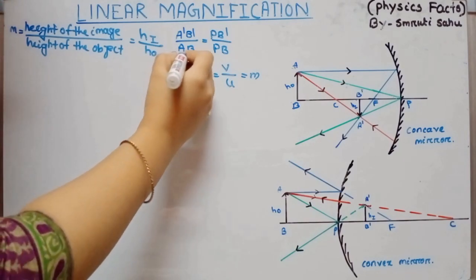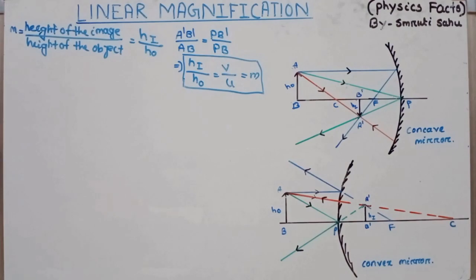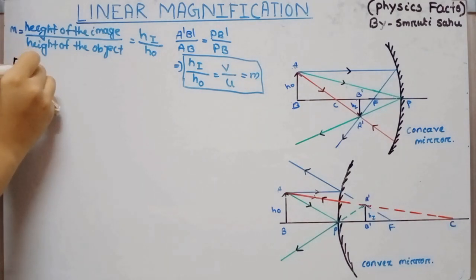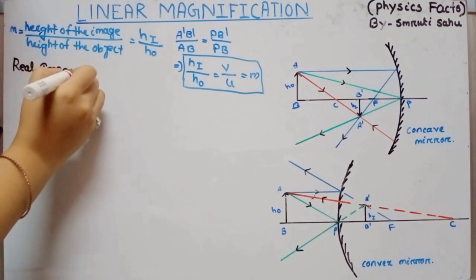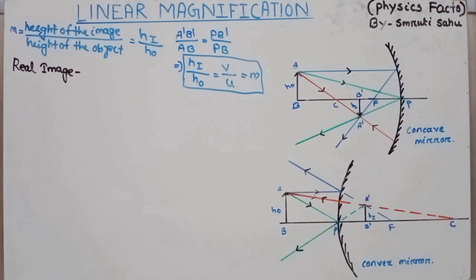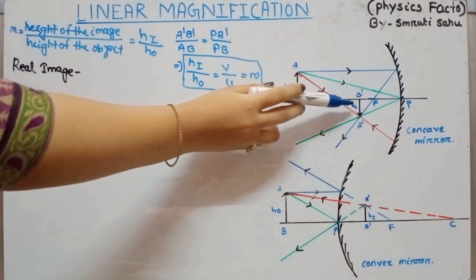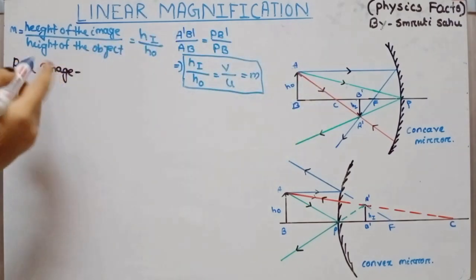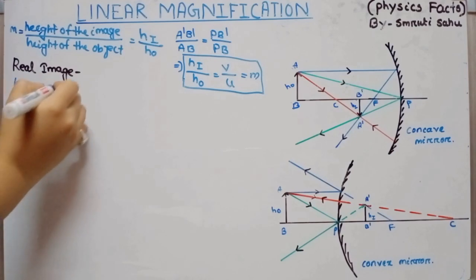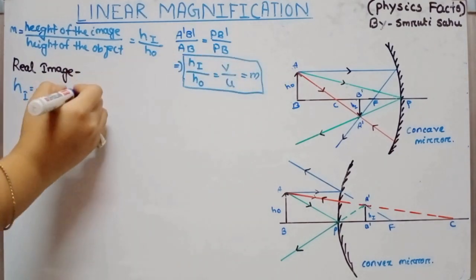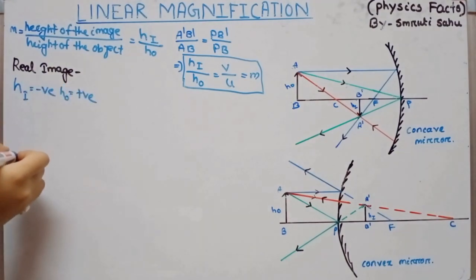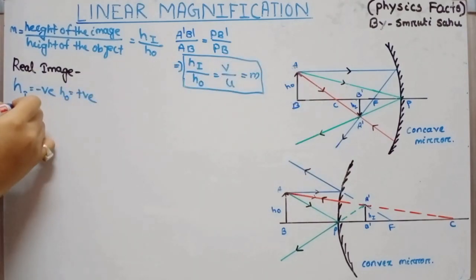Now for different cases, depending on whether the image is real or virtual, we examine the magnification. Taking the first case: if the image is a real image, the real image is always inverted.